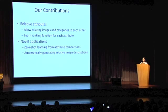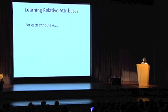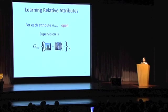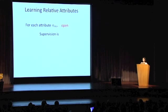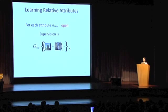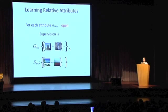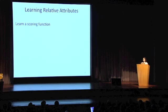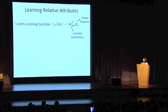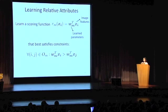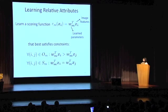How do we learn these relative attributes? For any attribute we want to learn, say 'open', we are given two modes of supervision. The first is a set O of ordered pairs of images i and j, saying image i is more open than image j. The second is a set S of unordered pairs, saying image i is as open as image j. We wish to learn a scoring function that is a linear transformation of the image features, satisfying: for pairs in O, the score of image i is greater than image j; for pairs in S, the scores are equal.